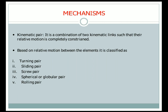Next we will see the kinematic pair. A kinematic pair is a combination of two kinematic links such that the relative motion is completely constrained. The two links are connected to each other and we cannot separate them. The relative motion between those links is completely constrained — if one is moving, the other link has to move or receive the energy or power.